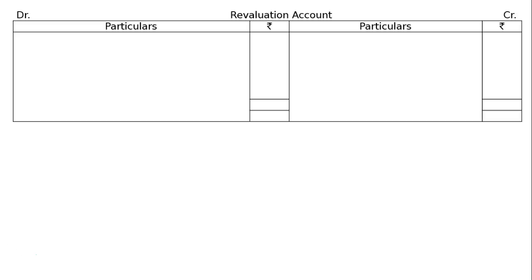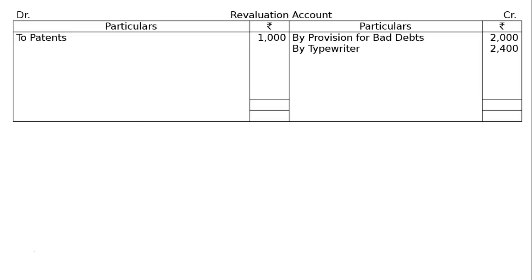Now, Revaluation Account. First item: provision for doubtful debt is to be reduced by Rs. 2,000 — if it is Rs. 5,000, it will be reduced by 2,000. Decrease in liability by provision for bad debts or doubtful debts: Rs. 2,000. This is a decrease in liability and it is income for the firm. Next: typewriter valued at Rs. 2,400 — increase in asset, Rs. 2,400. And patents — patents are valueless, decrease in asset of Rs. 1,000, written up to Revaluation Account. Total the credit side: Rs. 4,400.